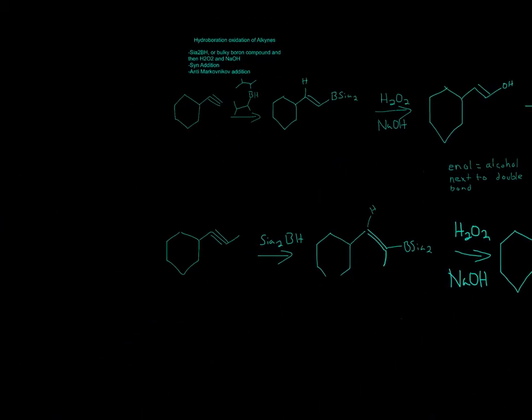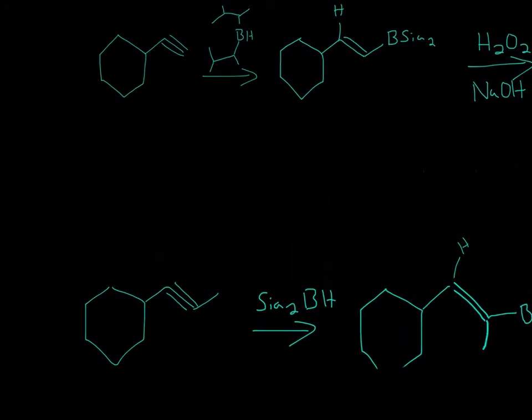So another form, for this one it was a terminal alkyne. For this one, we'll do an internal alkyne. So we have the same compound. This means the same thing, Ca2BH.